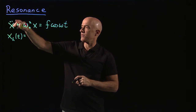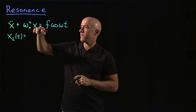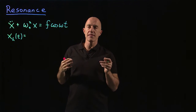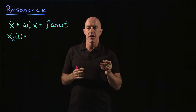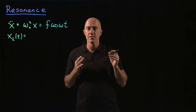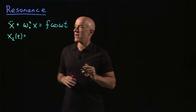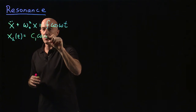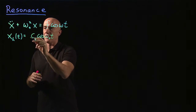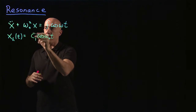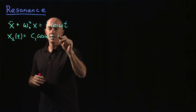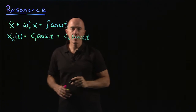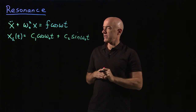Which function, when you take the second derivative, gives you back the function itself times negative omega naught squared? We know that the second derivative of cosine is negative cosine and the second derivative of sine is negative sine. So we can write down the homogeneous solution as some constant times cosine omega naught t plus another constant times sine omega naught t.